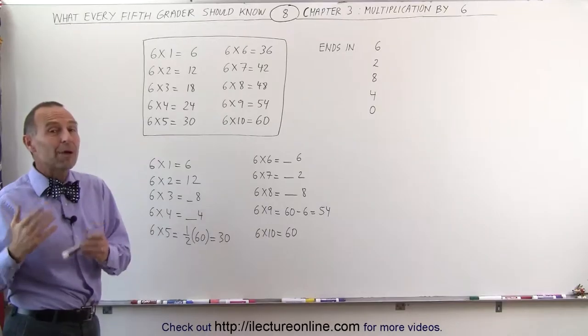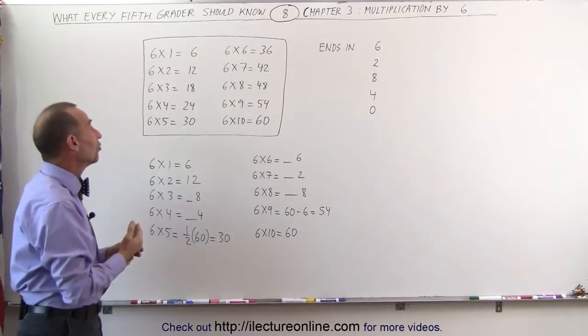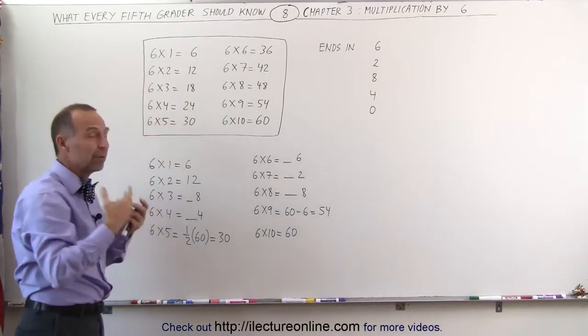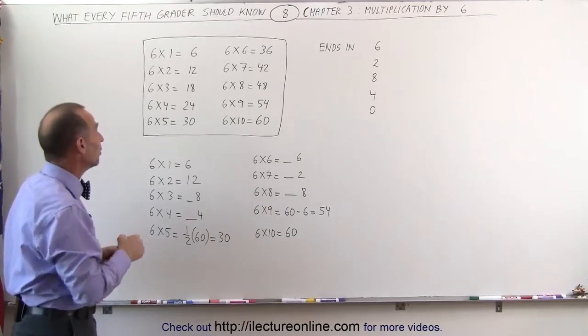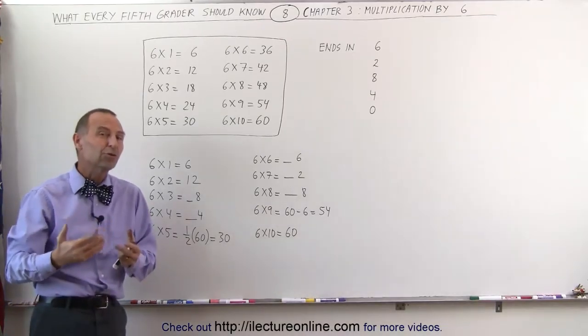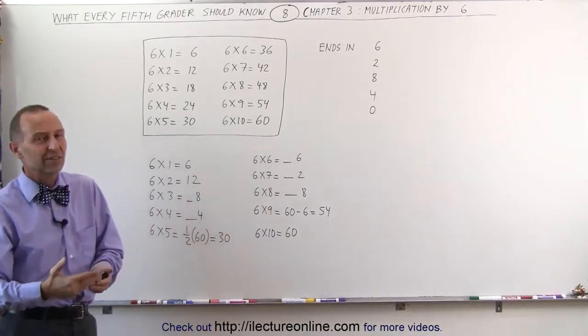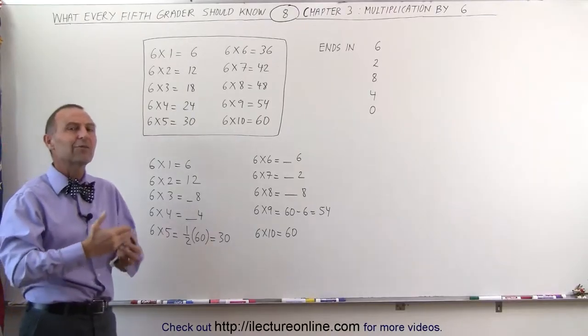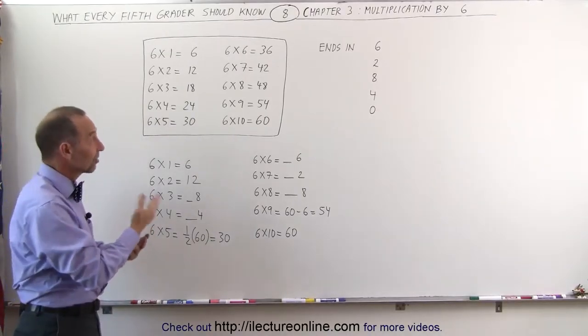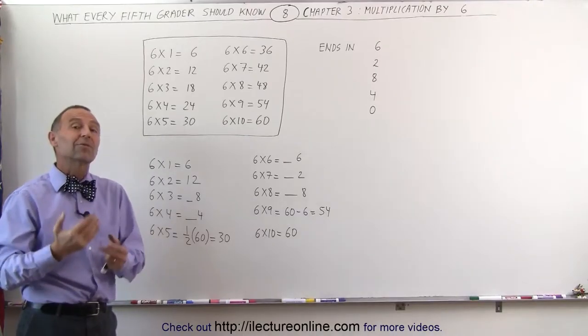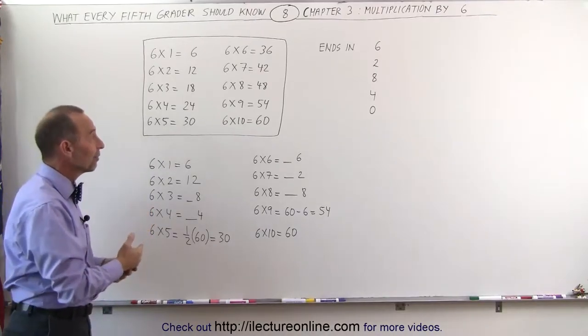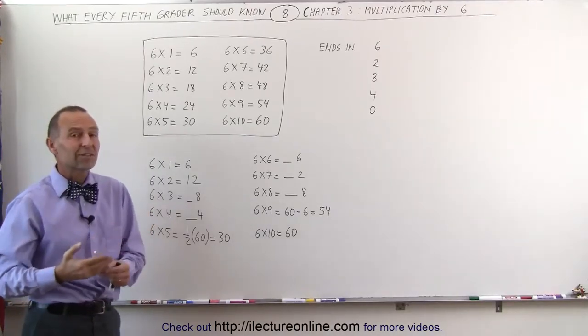Now we still need to memorize them by rote memorization. We still need to go through the table and try to memorize all the numbers one by one. 6 times 1 is 6, 6 times 2 is 12, 6 times 3 is 18, 6 times 4 is 24, 6 times 5 is 30, 6 times 6 is 36, 6 times 7 is 42, 6 times 8 is 48, 6 times 9 is 54, and 6 times 10 is 60.